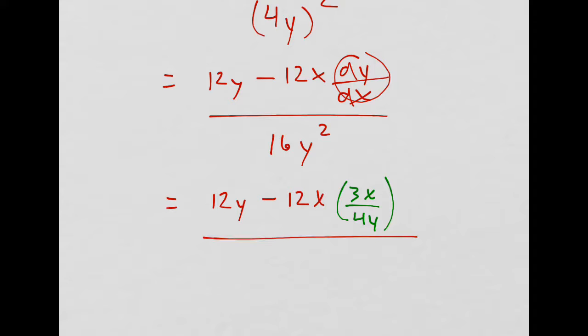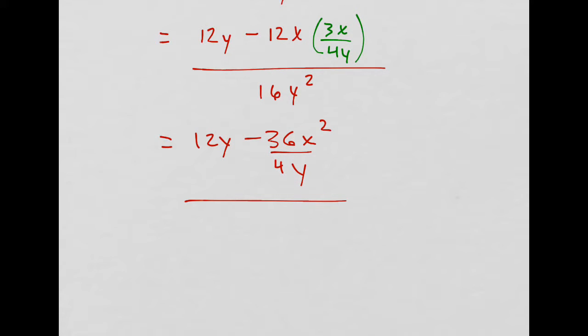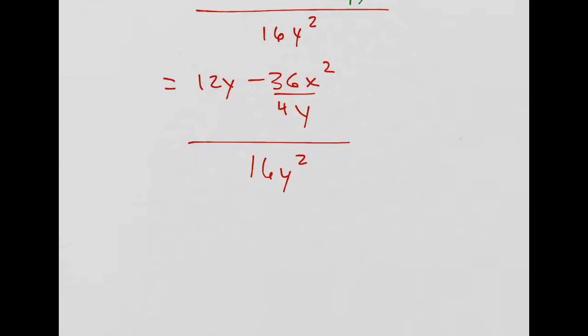And then I'm going to simplify it since I'm making a video about it. This would be 12y, this would become x squared, so we have 12 times 3 is 36, and that's x squared over 4y, I guess I could have reduced that part, over 16y squared. I'm just going to keep going.